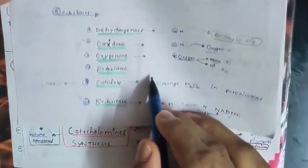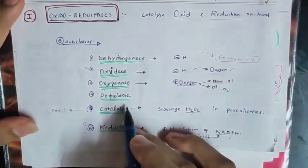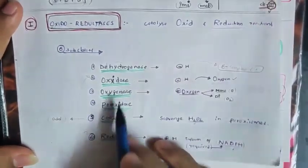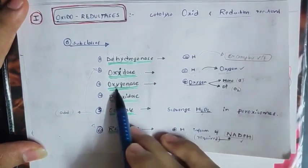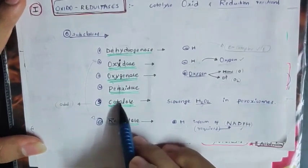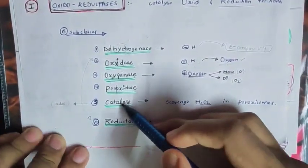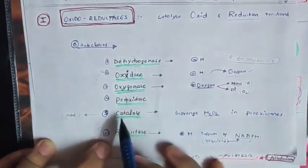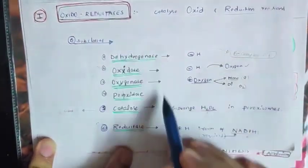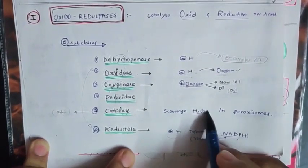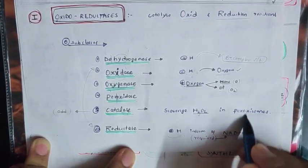Coming to Peroxidase — just remember the name. Coming to Catalase: the name looks somewhat odd compared to Dehydrogenase, Oxidase, Oxygenase, Peroxidase, and Reductase. Remember that Catalase also comes under Oxidoreductase. The function of Catalase is to scavenge H2O2 (hydrogen peroxide) in peroxisomes, a cell organelle.